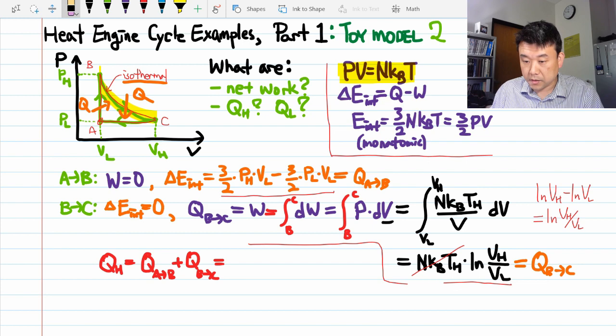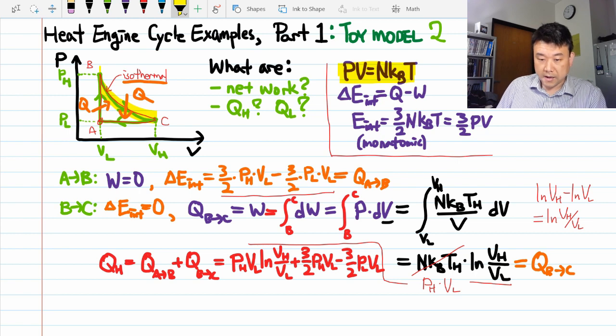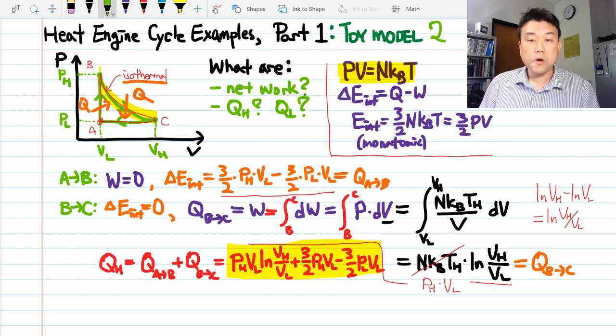Instead of writing this in terms of temperature, I can write it in terms of pressure and volume. This would be equal to high pressure times the low volume. So, with that, this is the expression for the total heat input. Let me highlight this so that I can find this easily later.